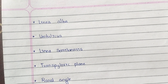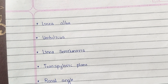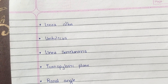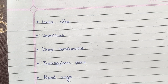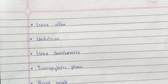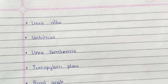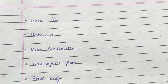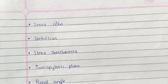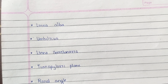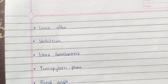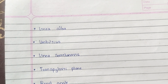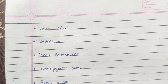The transpyloric plane is the transverse plane passing anteriorly through the tip of the ninth costal cartilage and posteriorly through the first lumbar vertebra. Along this plane lies the pyloric region of the stomach, beginning of the duodenum, neck of the pancreas, and fundus of the gallbladder.